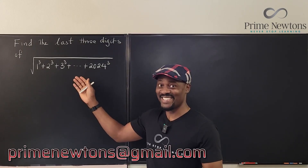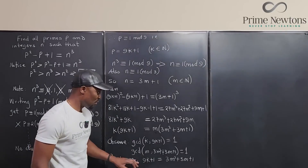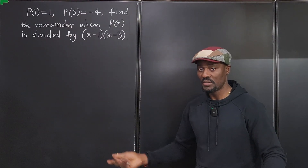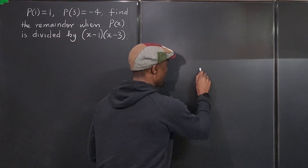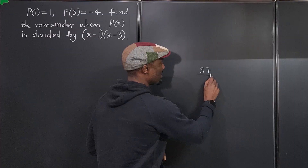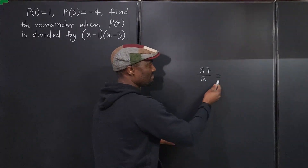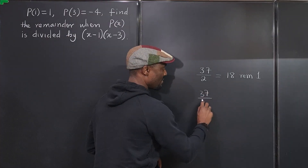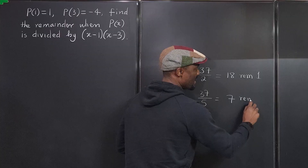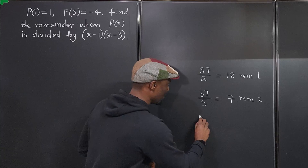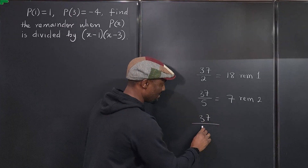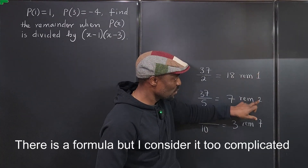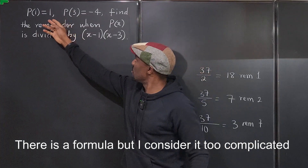Here's how to understand this problem. Take the number 37. When you divide 37 by 2, you get 18 remainder 1. When you divide 37 by 5, you get 7 remainder 2. Now when you divide 37 by 2 times 5, which is 10, you get 3 remainder 7. There is no way you would know how to use the remainders 1 and 2 to obtain 7.